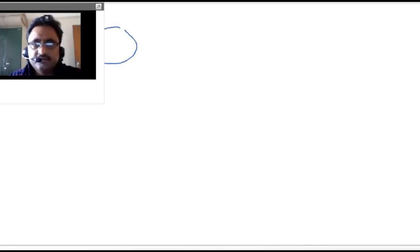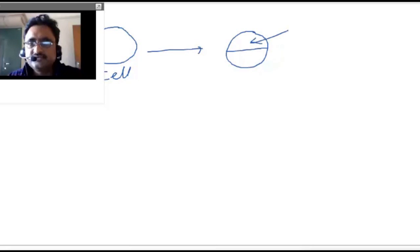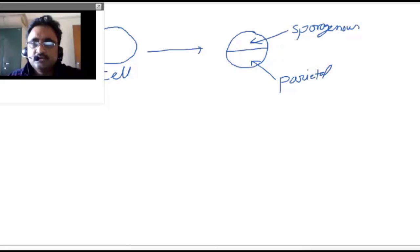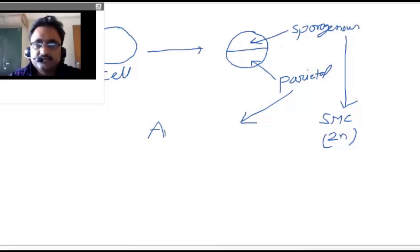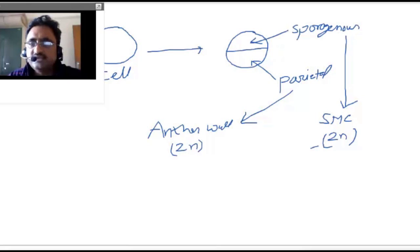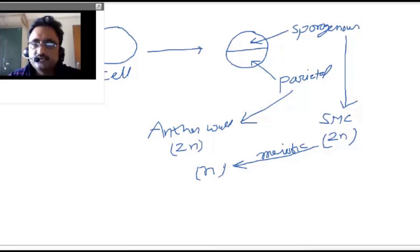Suppose we take one particular starting cell. What happens is there is a transverse division, and as a result two cells are formed. The upper cell is called the sporogenous cell, and the lower cell is called the parietal cell. The sporogenous cell later develops into the spore mother cell — a diploid structure. The parietal cell later forms the anther wall, also a diploid structure. The spore mother cell then enters meiotic division, and as a result, haploid spores are formed. This is what microsporogenesis is all about.